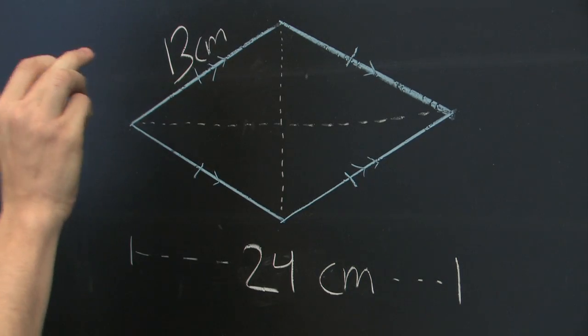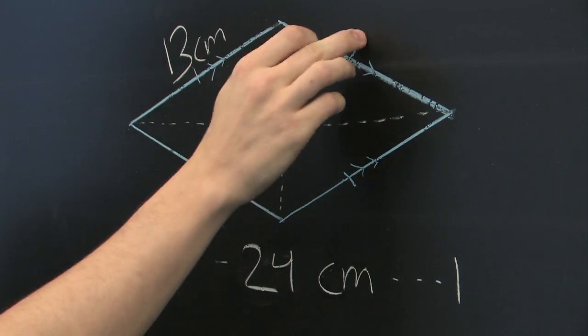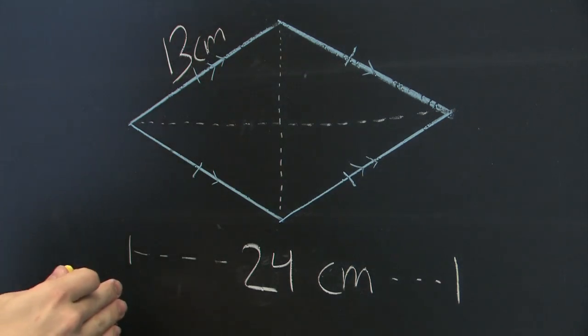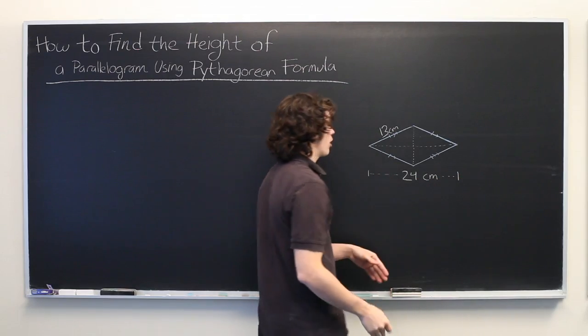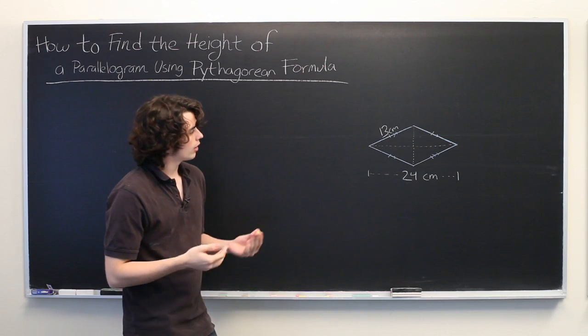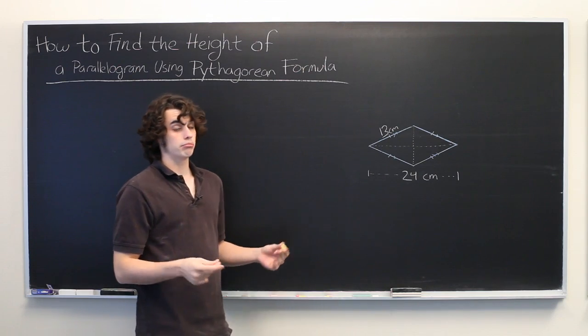We know that each of the sides is of length 13 centimeters, and we know that the width of the parallelogram is 24 centimeters. Is this enough information to find the height? The answer is yes.